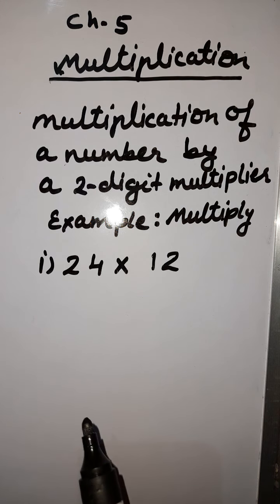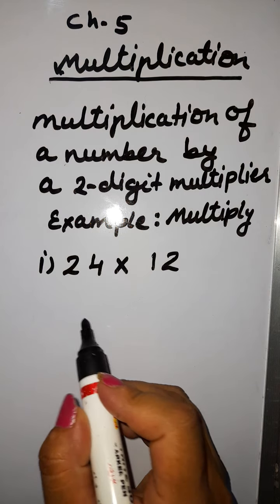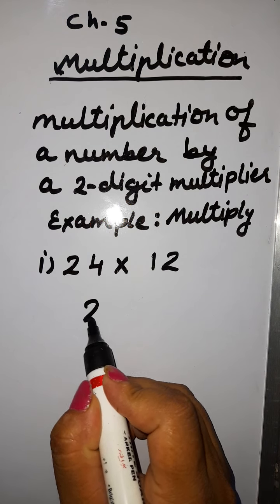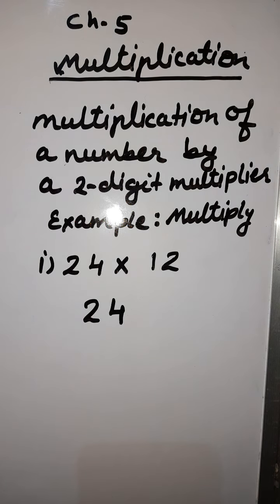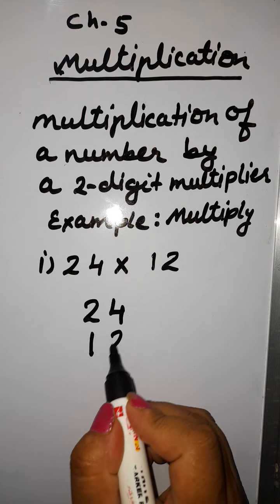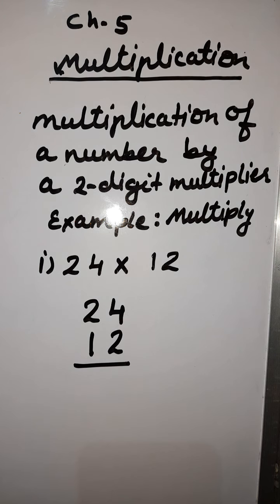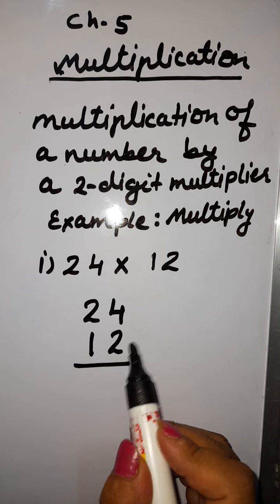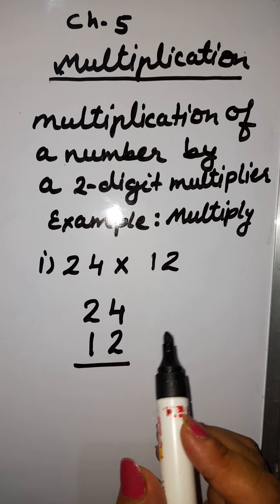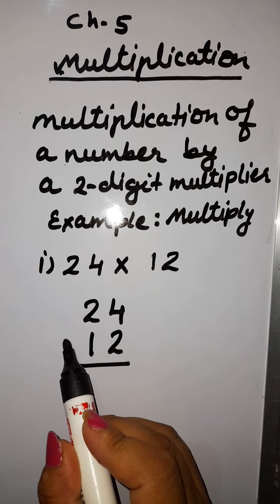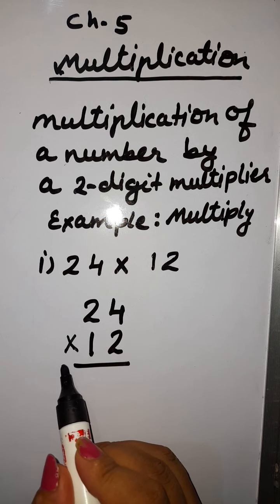First we will write these both numbers in the column, like 24 as a multiplicand and 12 as a multiplier. So this one is the multiplier and this is the multiplicand. We have written both numbers in the column. This is the multiplication sign.